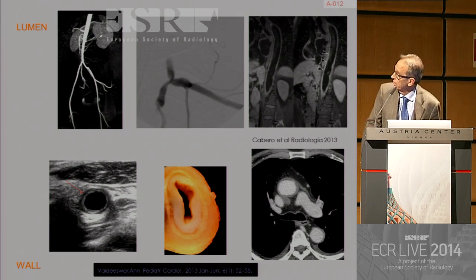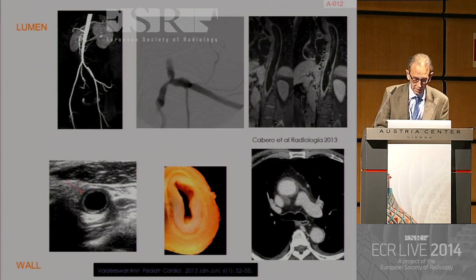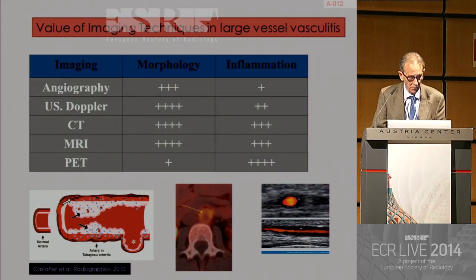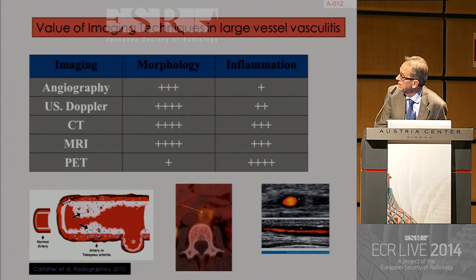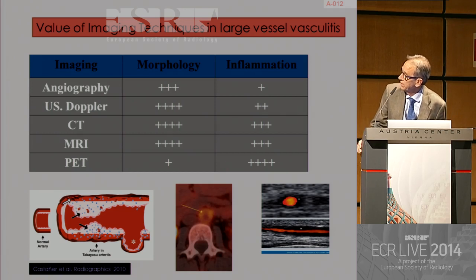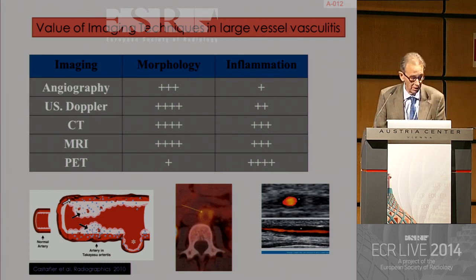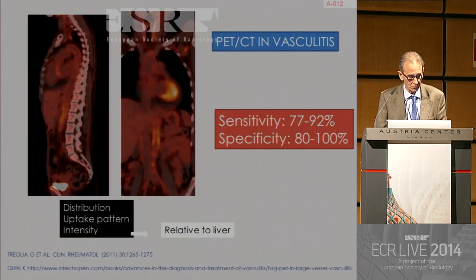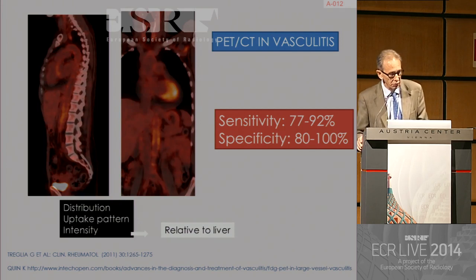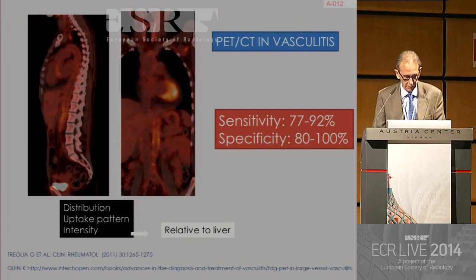Techniques that also look at the vessel wall include ultrasound, which is very good for vessels reachable by ultrasound, and obviously CT. Comparing different techniques for large vessel vasculitis: for vessel morphology and lumen, angiography is excellent, US Doppler is excellent, CT is good, and MRI is good, but PET is not very good. Conversely, inflammation is not seen well by angiography, but is seen much better with the other techniques. PET-CT is now very much used in vasculitis of the large vessels.